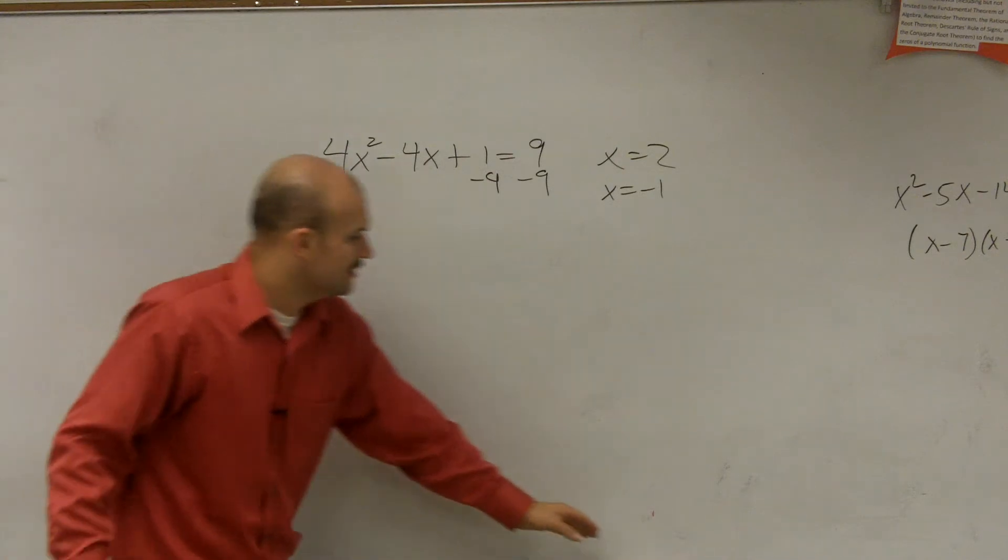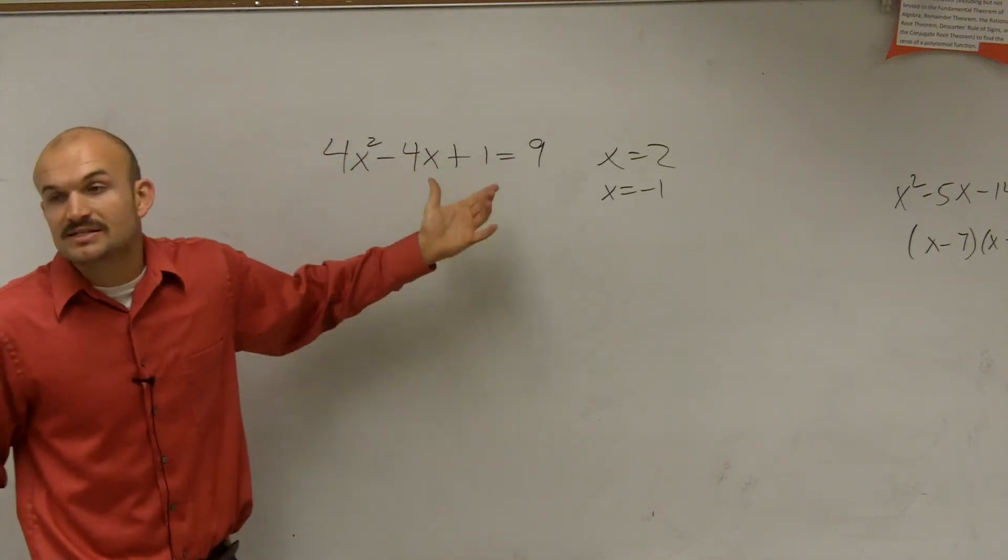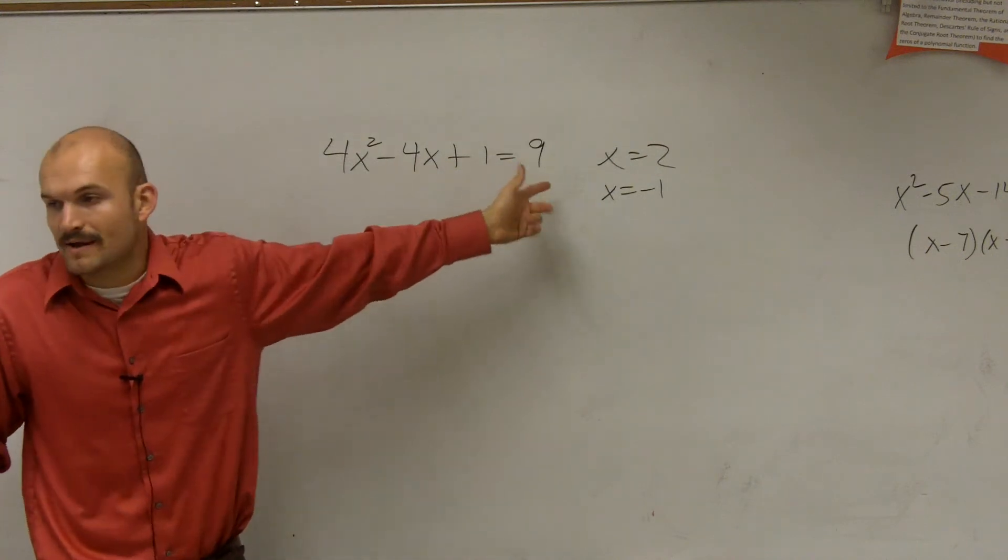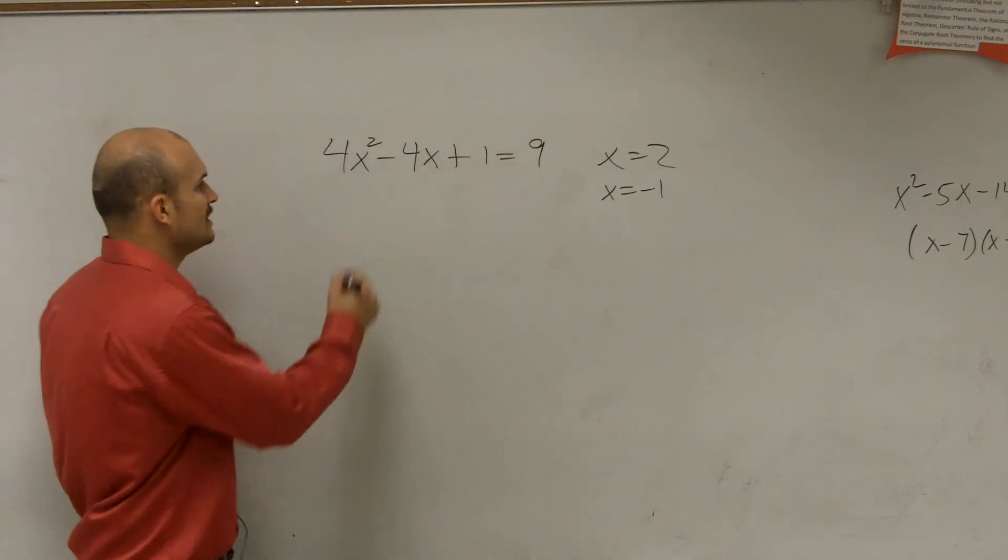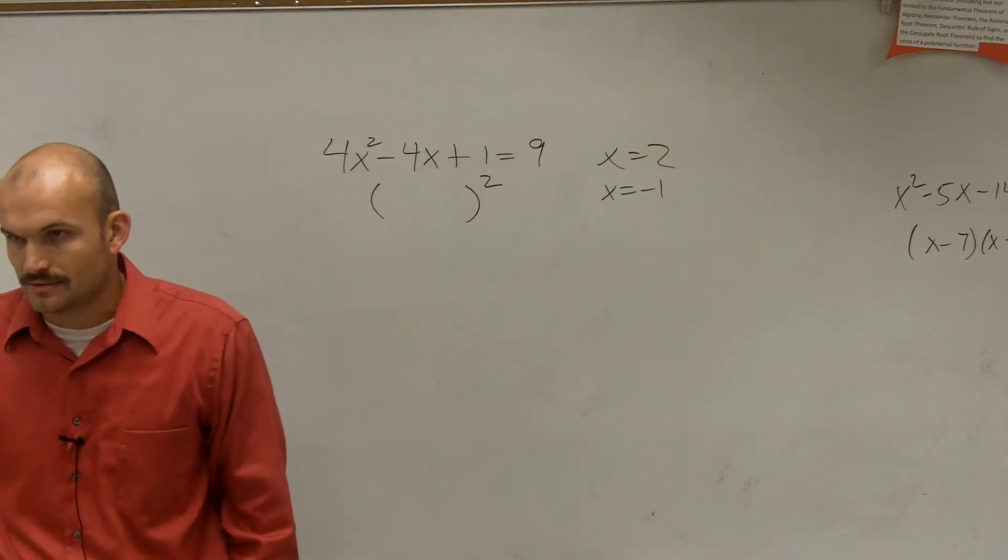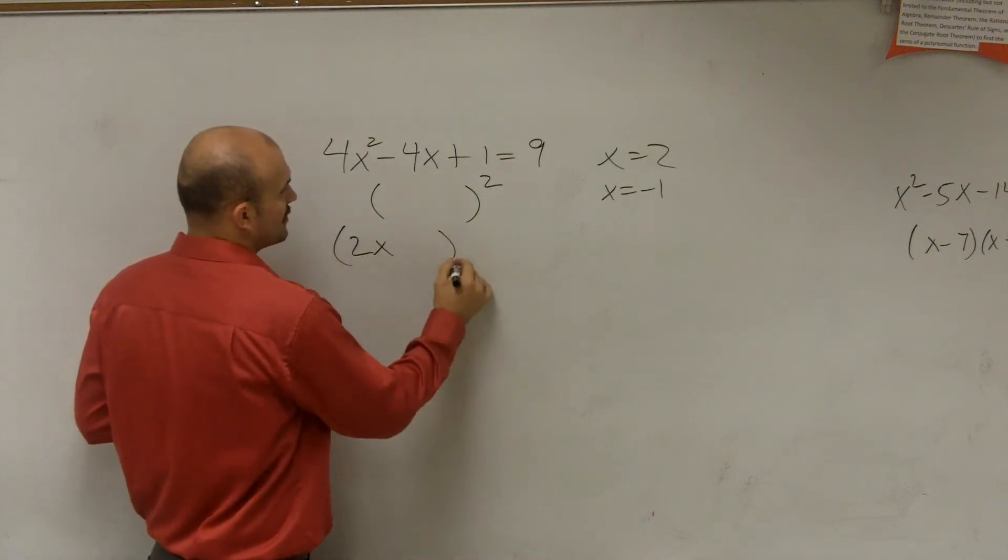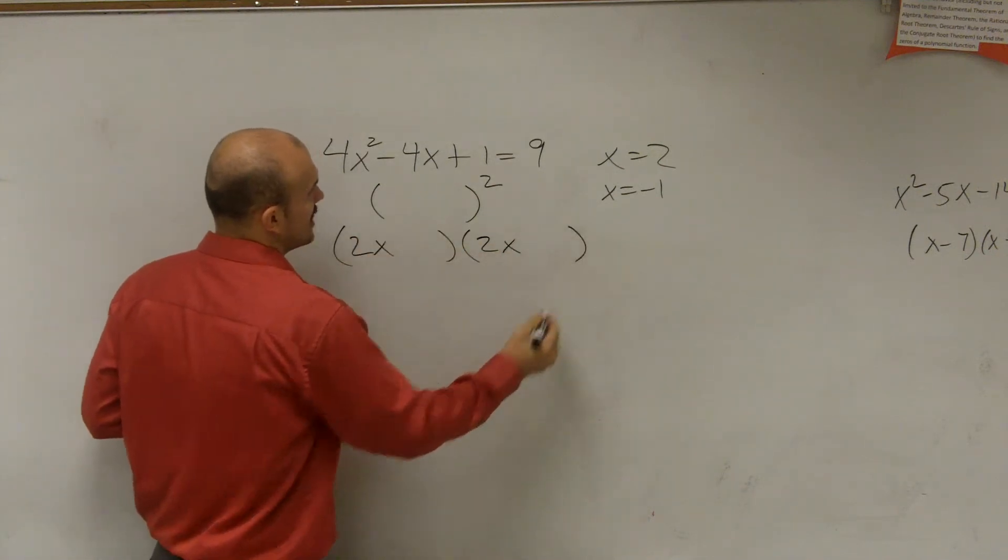is to determine, is this a perfect square trinomial? Because if it's a perfect square trinomial, I don't have to set it equal to 0. Meaning, can I write this as a factor squared? All right? So what that really means is the same factor multiplied by itself.